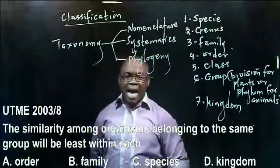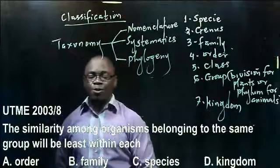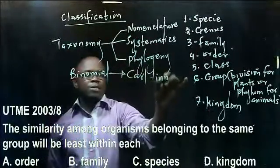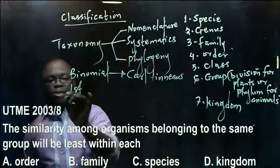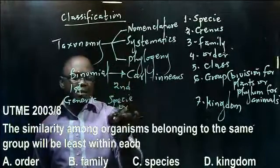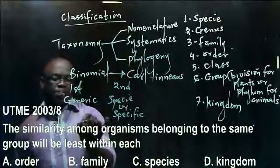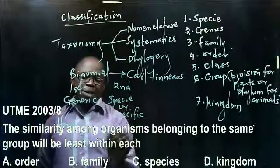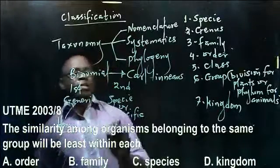Nomenclature means the act of naming organisms. In biology, the system of naming we adopt is the binomial system of nomenclature, invented by Carl Linnaeus in the 17th century. This method involves giving an organism two names: a generic name first, and a specific name second. For example, humans are known as Homo sapiens — Homo is the generic name, sapiens is the specific name. Only the first letter of the generic name is capitalized; all other letters are in small letters.